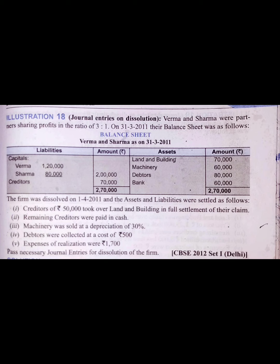In this video, we will solve a question where Verma and Sharma are two partners with ratio 3 to 1 and they dissolve their firm as on 31st March 2011. For dissolution, one balance sheet and some adjustments are given, and with the help of that balance sheet and adjustment, we have to prepare three accounts.